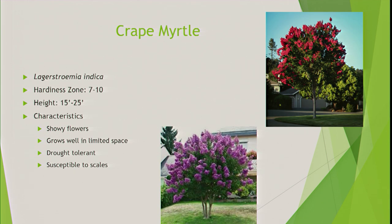Crape myrtles — although we over-plant them, they're still a pretty good tree. The pests I know of — mites and aphids — are more of a nuisance rather than killers. They're pretty hardy, grow 15 to 25 feet, have very showy flowers, and can grow well in very limited space, making them great for right-of-way plantings.